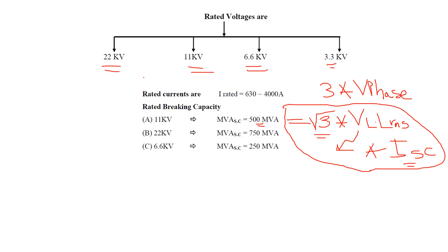These breaking capacity values depend on the power grid. According to your specific grid, you will know the MVA short circuit value for each voltage level. You identify the maximum short circuit current, and from that you determine the required MVA. These values are standardized per power grid — not worldwide, but specific to each grid.